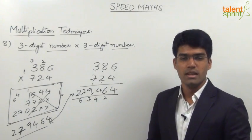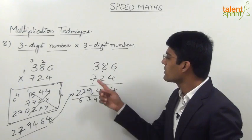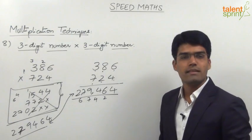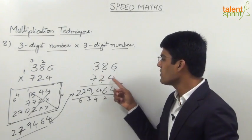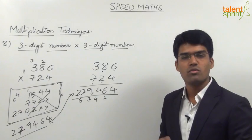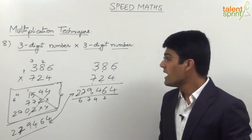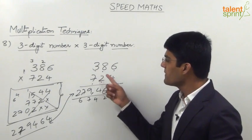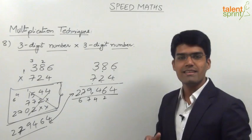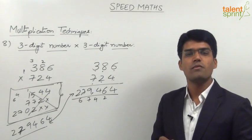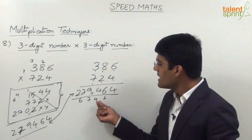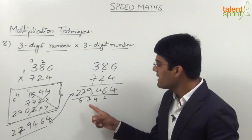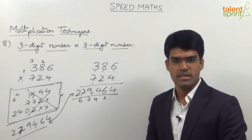The third step is the most important one: cross multiply units places with hundreds places and also multiply the tens places. 3 into 4 is 12, 6 into 7 is 42; 12 plus 42 is 54. Multiplication of tens places: 8 into 2 is 16. So 54 plus 16 is 70.